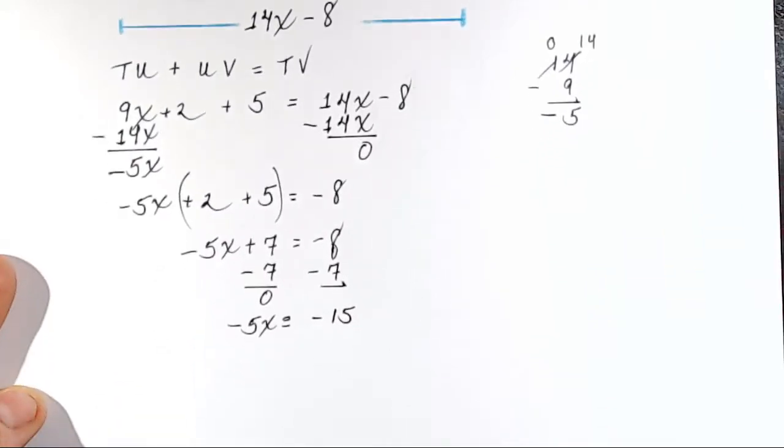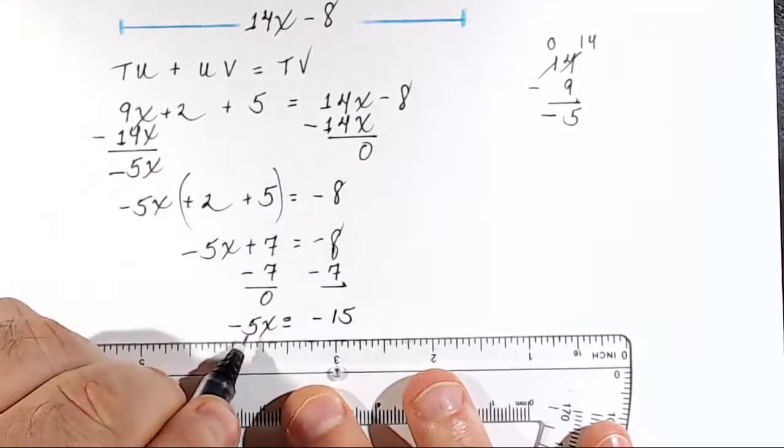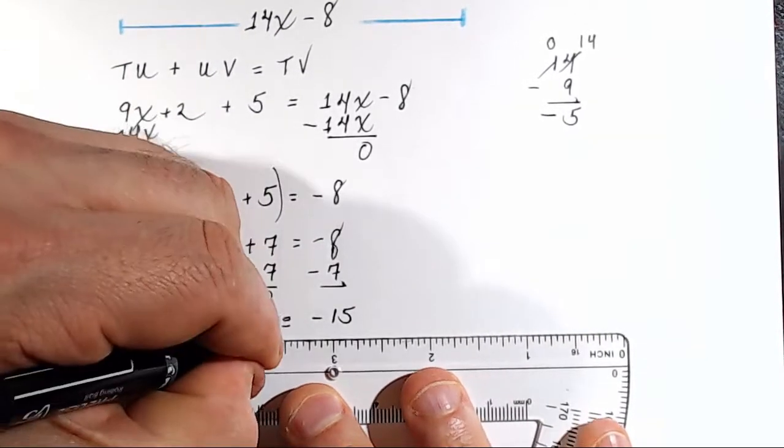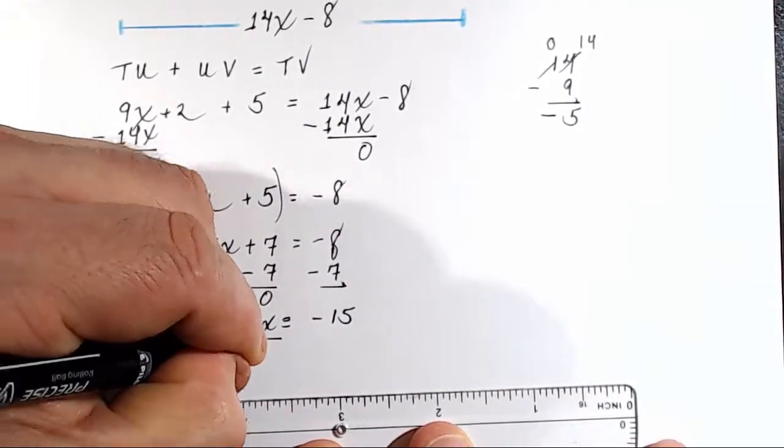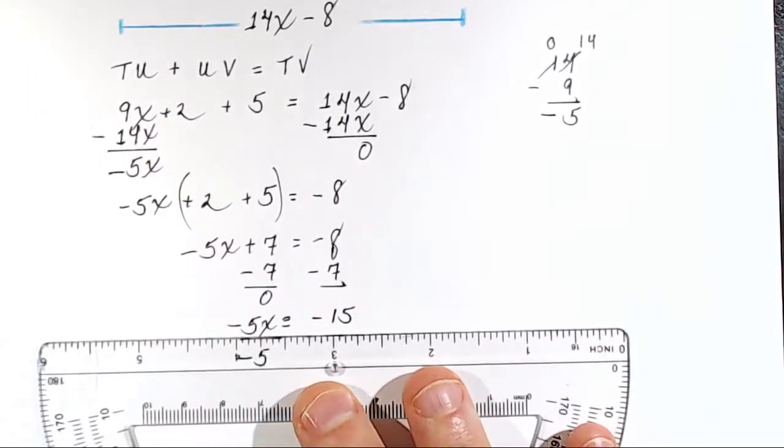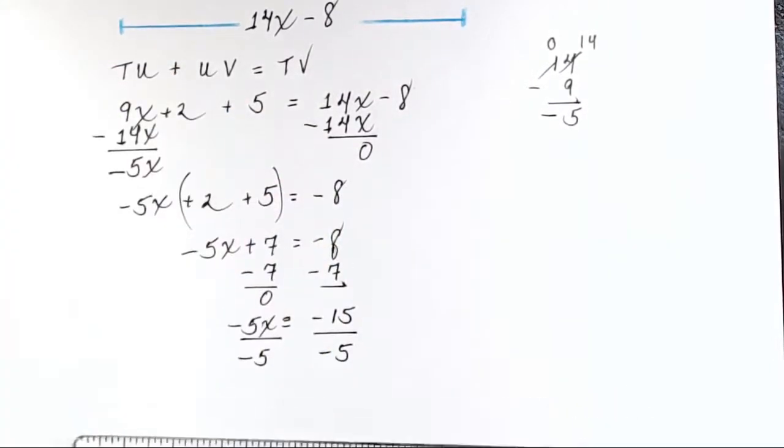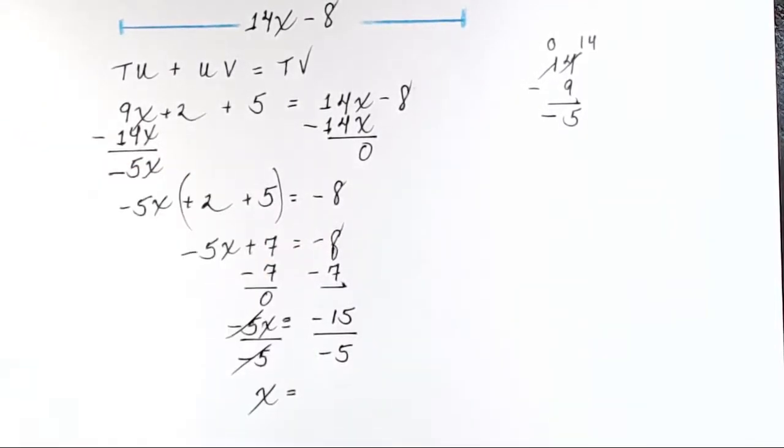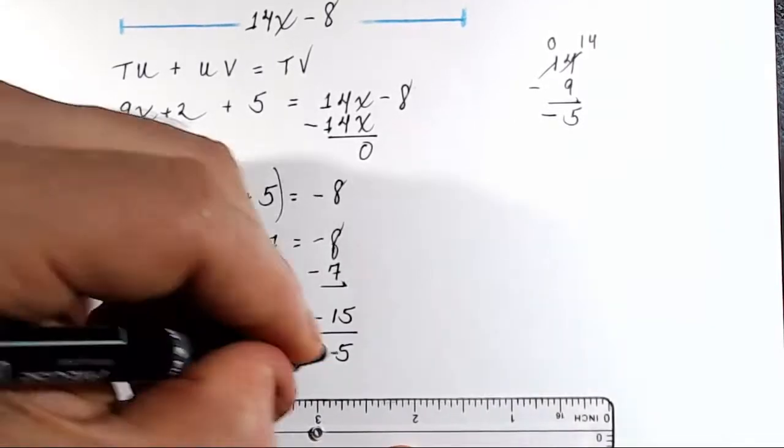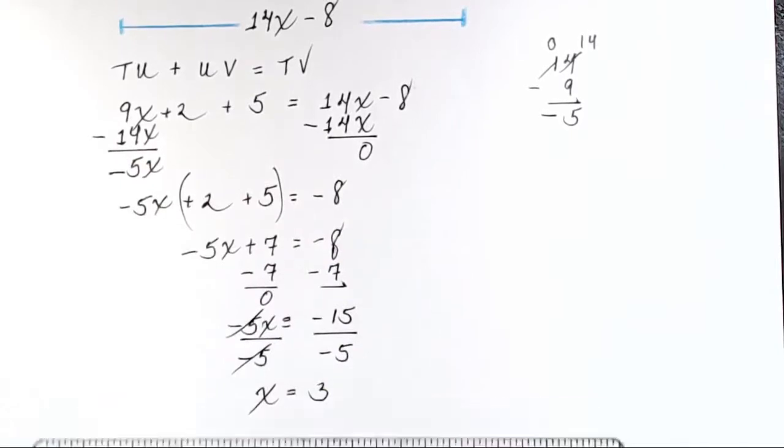So we've got to get x by itself. Right now, we have negative 5 multiplied by x. Therefore, we should divide negative 5x by negative 5 and divide negative 15 by negative 5. The negative 5s cancel on the left, leaving x by itself. And x equals negative 15 divided by negative 5. That's negative divided by a negative is a positive. Therefore, negative 15 divided by negative 5 is just positive 3.